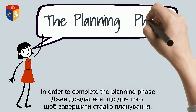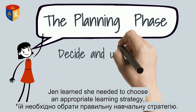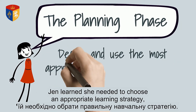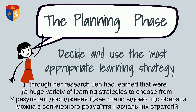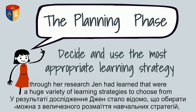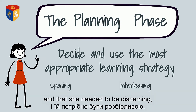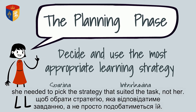In order to complete the planning phase, Jen learned she needed to choose an appropriate learning strategy. Through her research, Jen had learned that there were a huge variety of learning strategies to choose from, and that she needed to be discerning — she needed to pick the strategy that suited the task, not her.